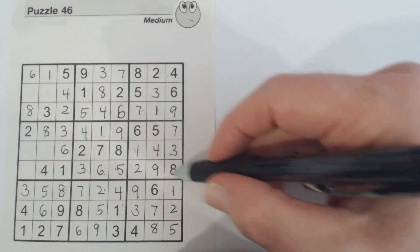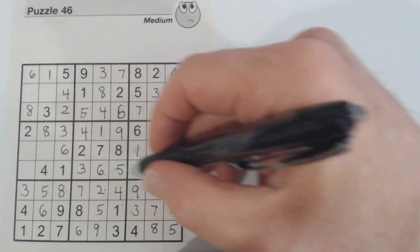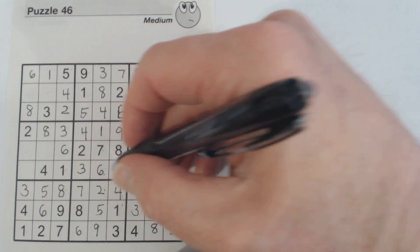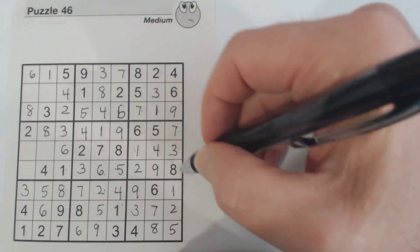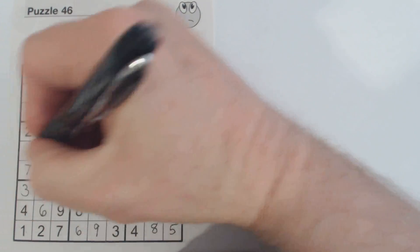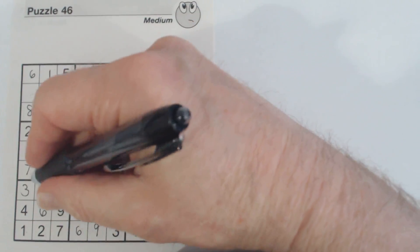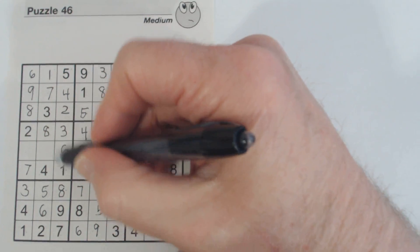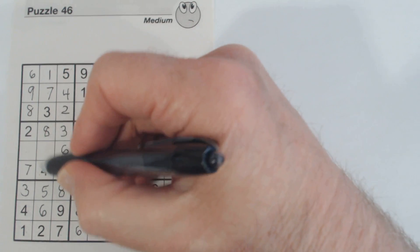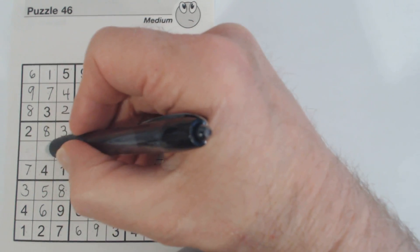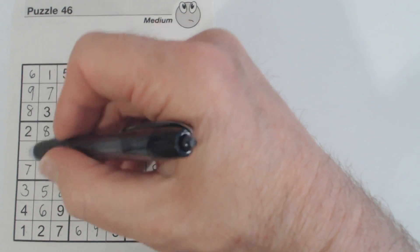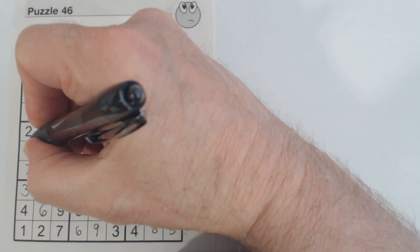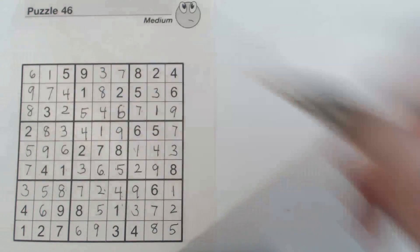Only one number missing here — counting 1-9 — 7s: 7, 7, 7, 7 — that's a 7, that's a 9. So we had those 7-9 twins for a while. And then counting: 5 and 9 missing there, and there's a 9 — so that's a 9.